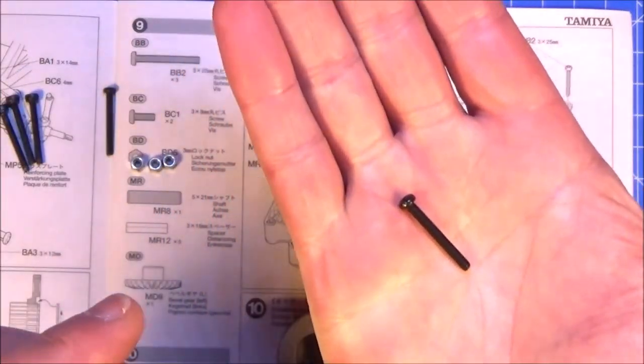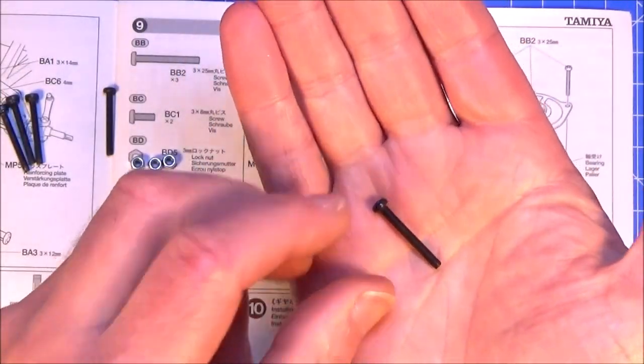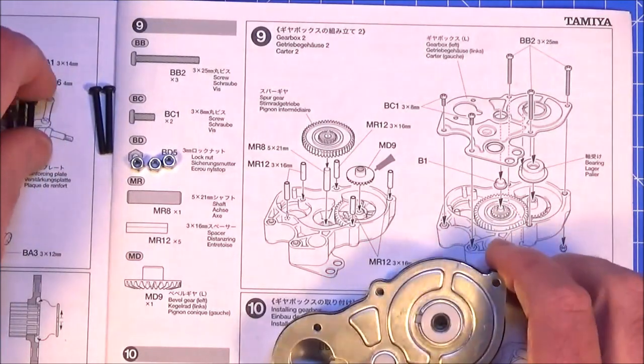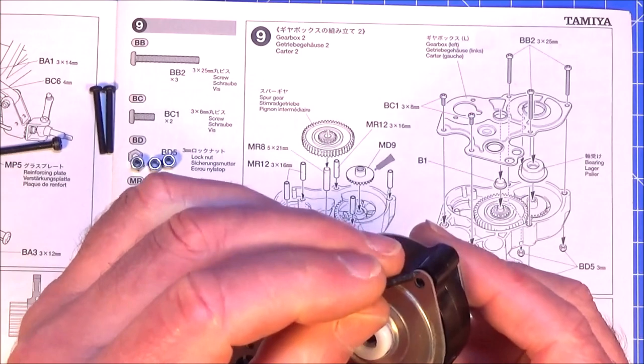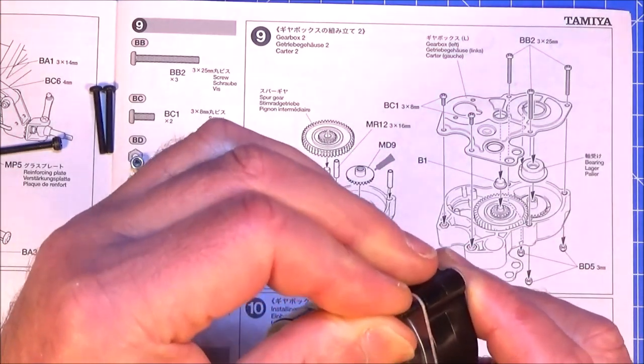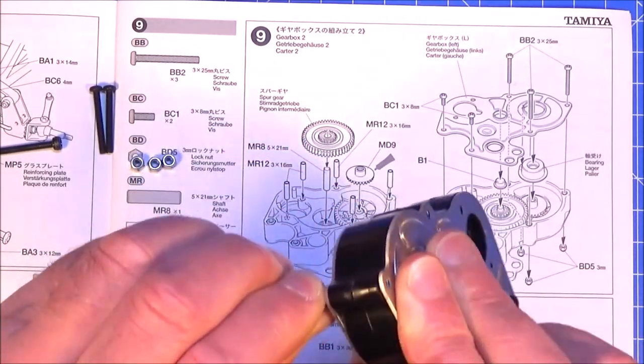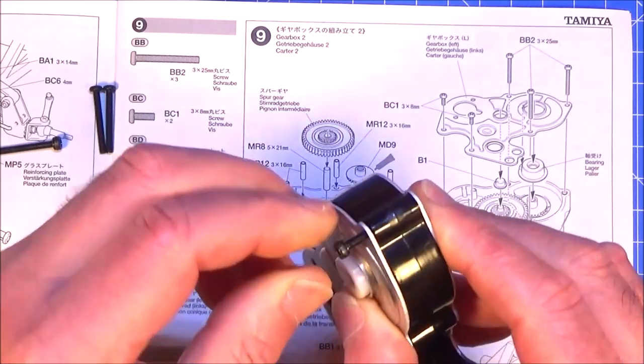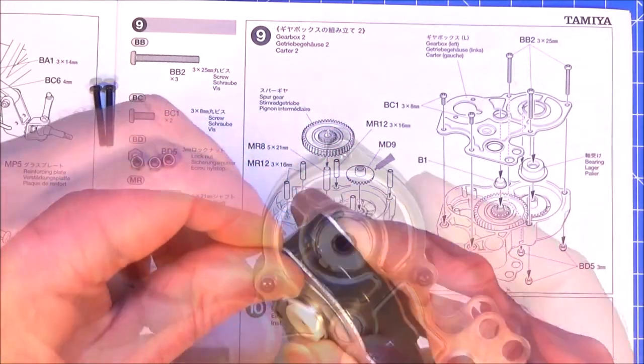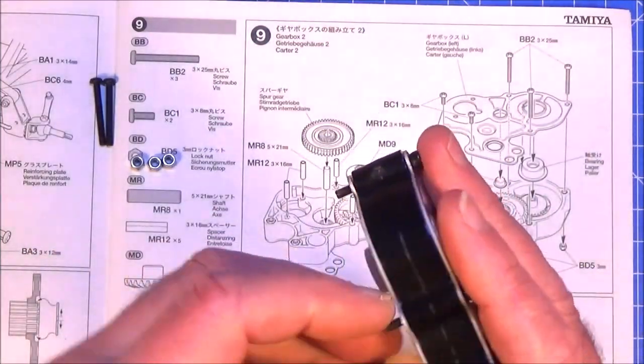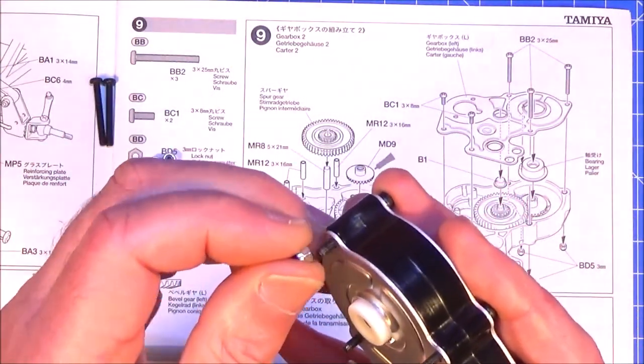And finally you need the three 3x25 screws which are these and would you believe there's one missing in this kit, well I can't find it anyway so I'm going to have to replace one of them. So I'm going to replace them all with some hex head screws but yeah that's a first for me. I don't think I've seen a screw missing before in a Tamiya kit but first time for everything.